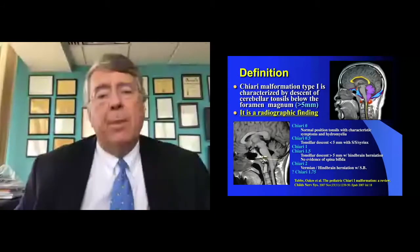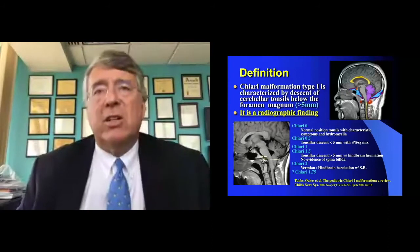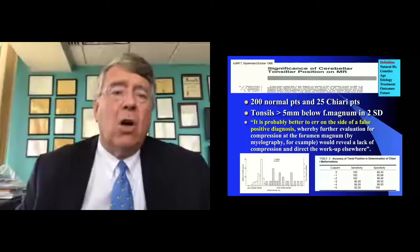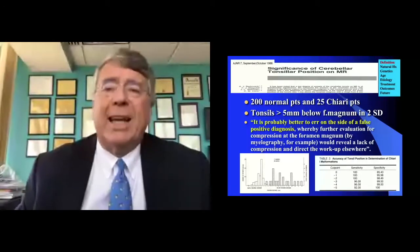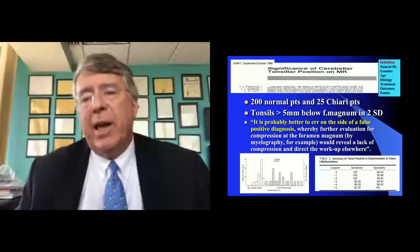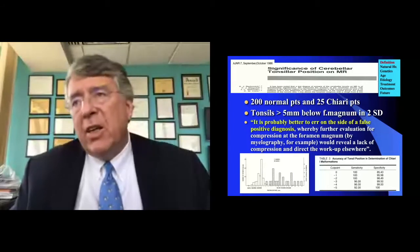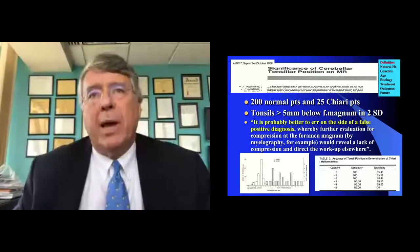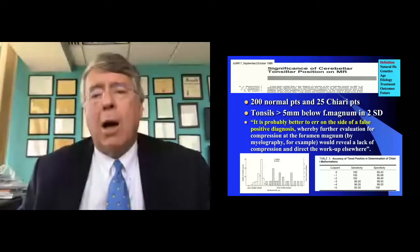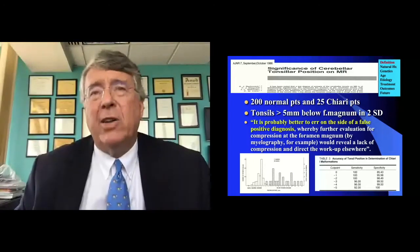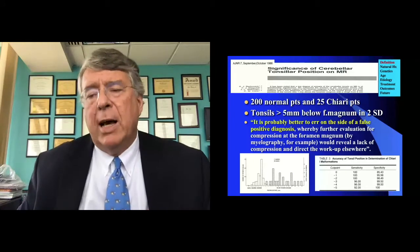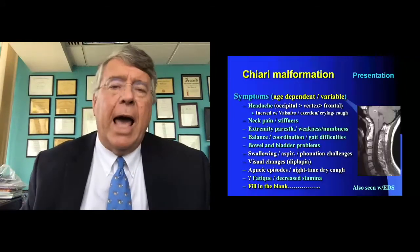Back to the definition: it's important to recognize that Chiari malformation is a radiographic finding — tonsils five or more millimeters below the foramen magnum. This all came from a paper by Varkovic back in 1986. They looked at a couple hundred normal patients and Chiari patients and took two standard deviations — that's where the number five came from. They said it's probably better to err on the side of a false positive diagnosis, but I'm not convinced that's applicable or true today.